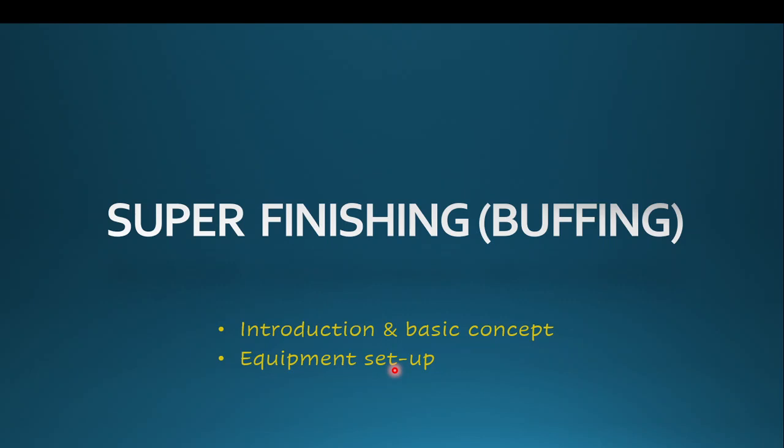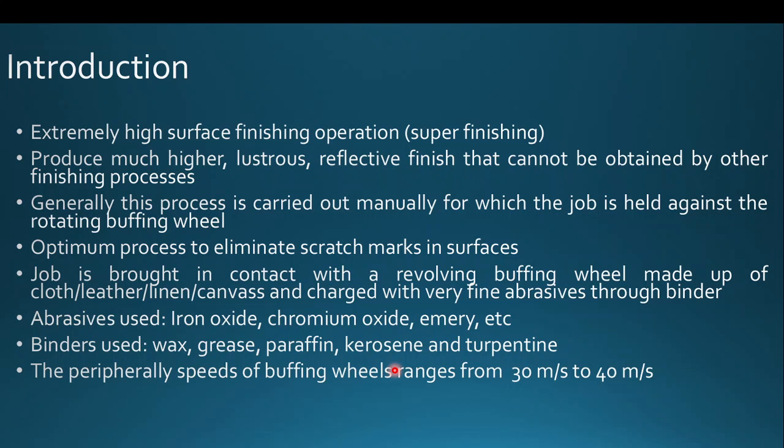Next is the super finishing operation — buffing. Buffing is an extremely high surface finishing operation, achieving even greater surface smoothness than electrochemical grinding. It stands as a super finishing process and produces very high smooth surfaces with a very low material removal rate compared to all other surface finishing processes, producing much higher lustrous, mirror-like finishing.